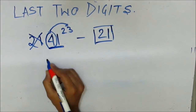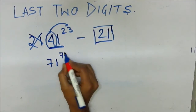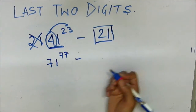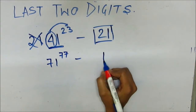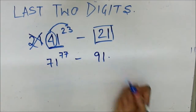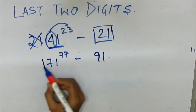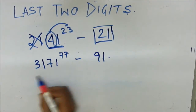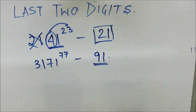For 71 to the power 77, it won't take more than five seconds: the last digit is 1, and 7 × 7 = 49, so the second last digit is 9. The last two digits are 91 — and whether it's 71, 171, or 3171, the last two digits will always be 91.